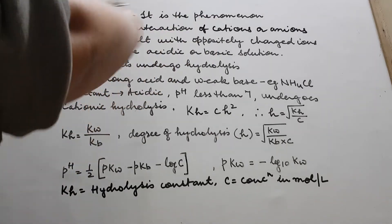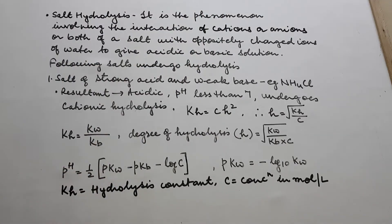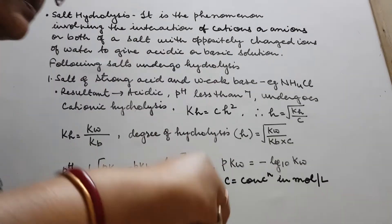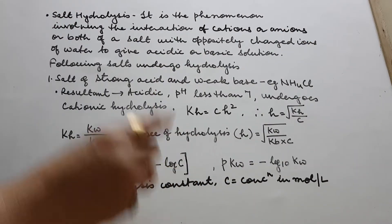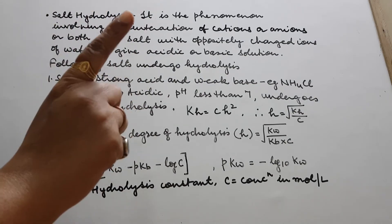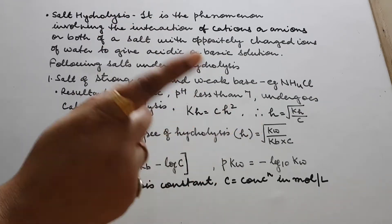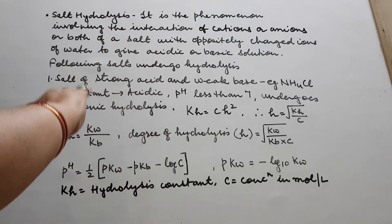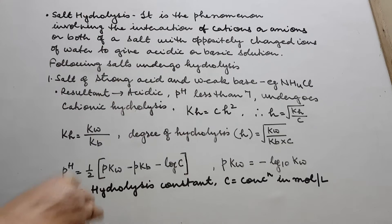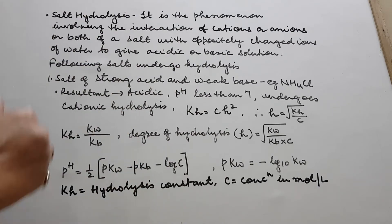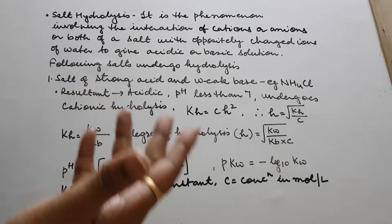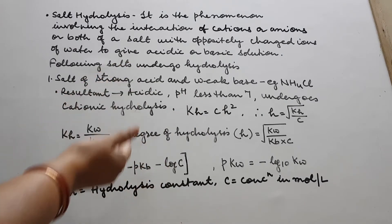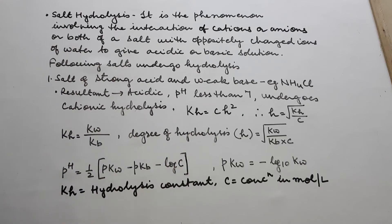In short: if you dissolve a salt in water and the resultant solution is either slightly acidic or basic — but not exactly neutral — the salt is said to undergo hydrolysis. The cations and anions present in the salt react with oppositely charged ions present in water.